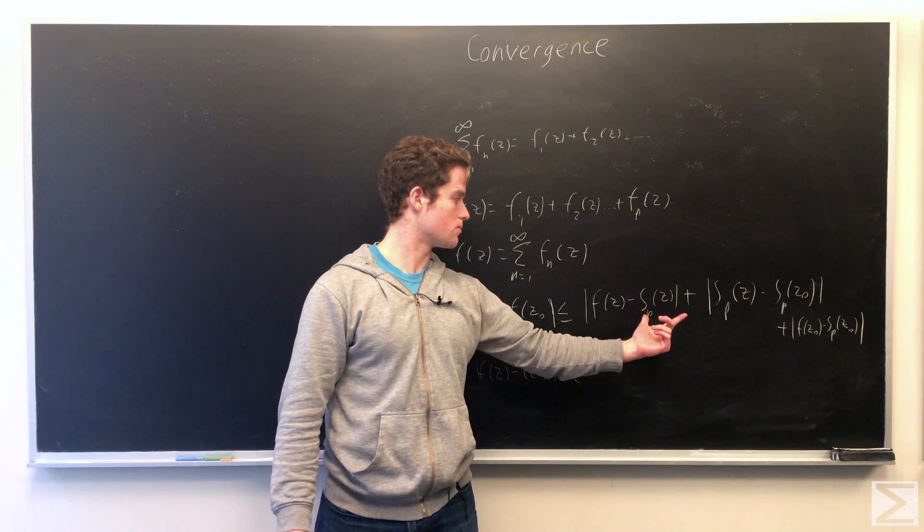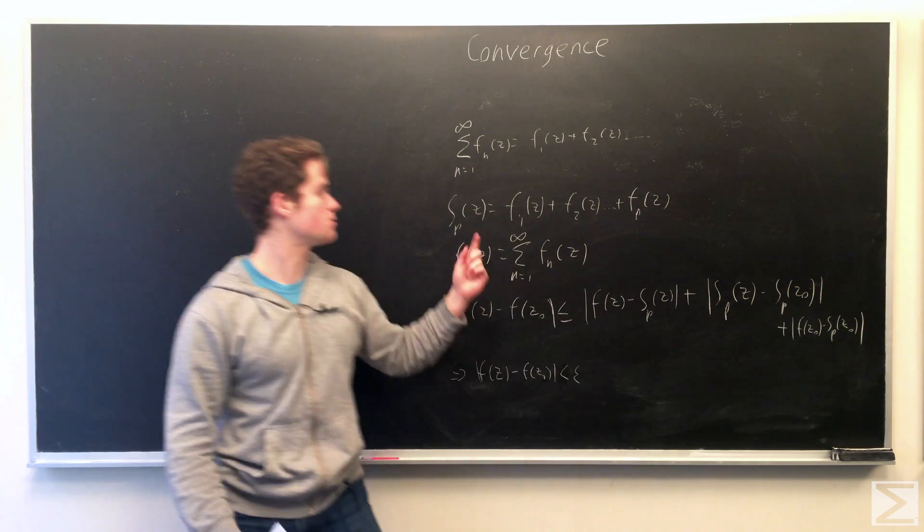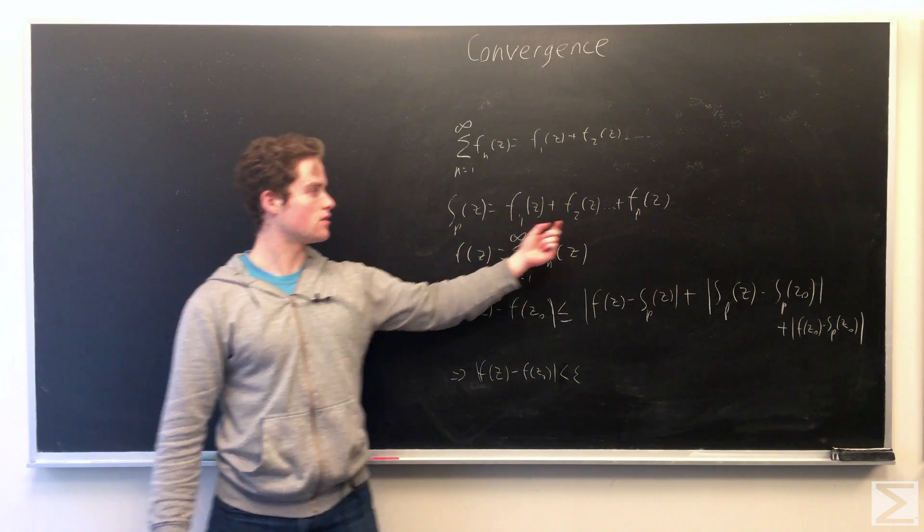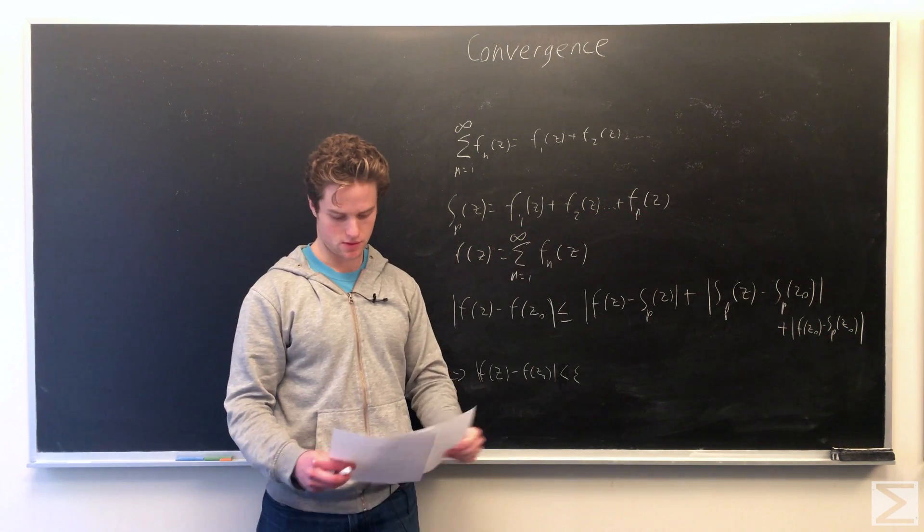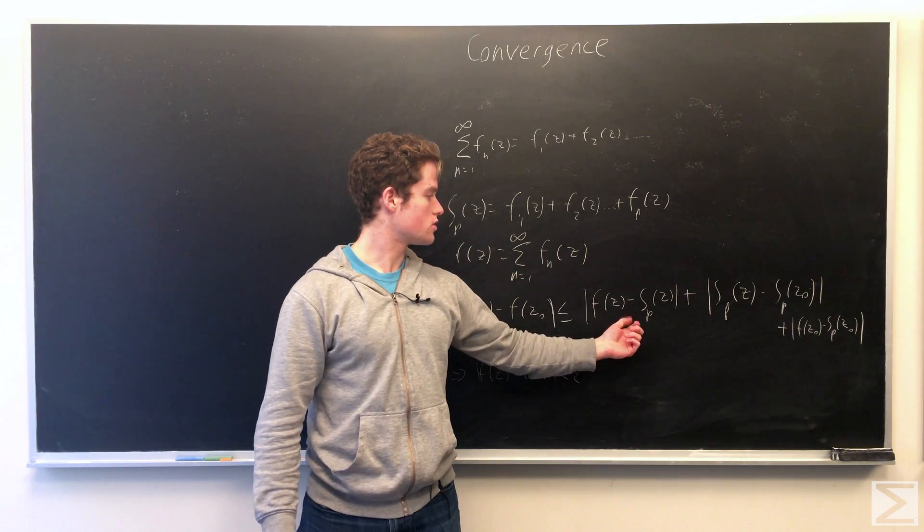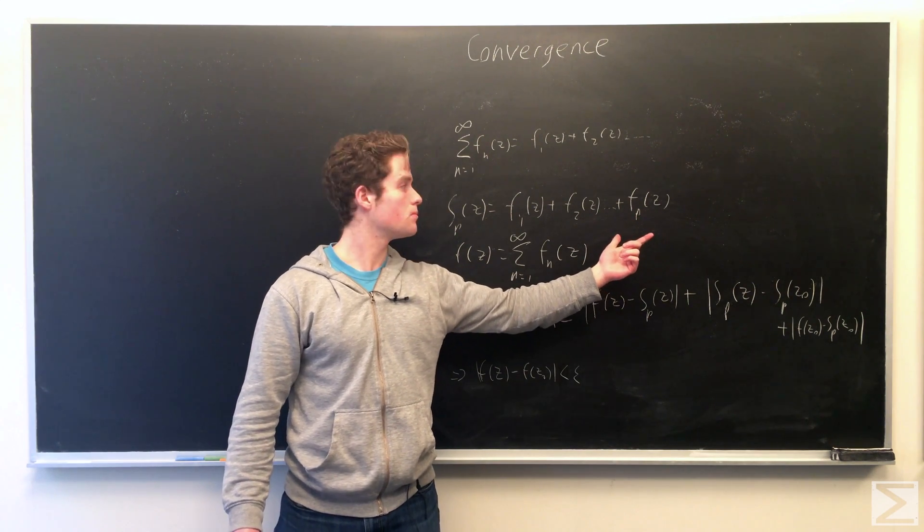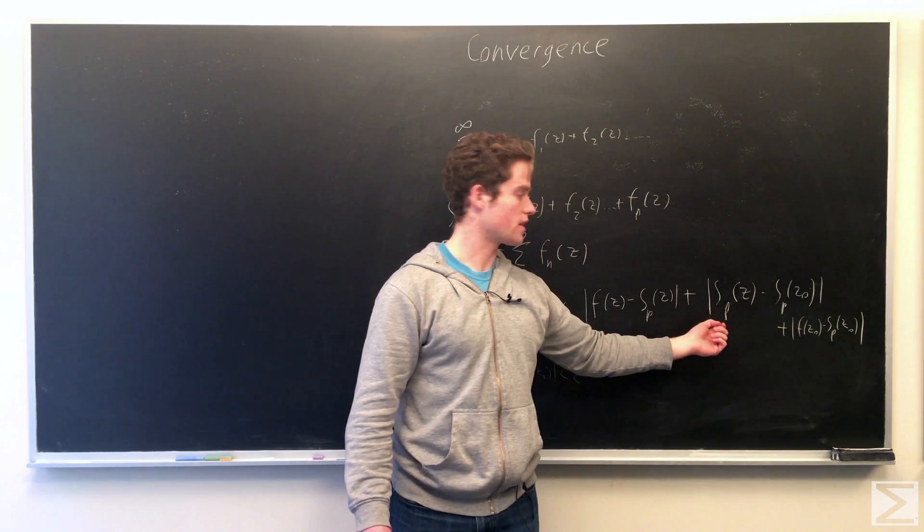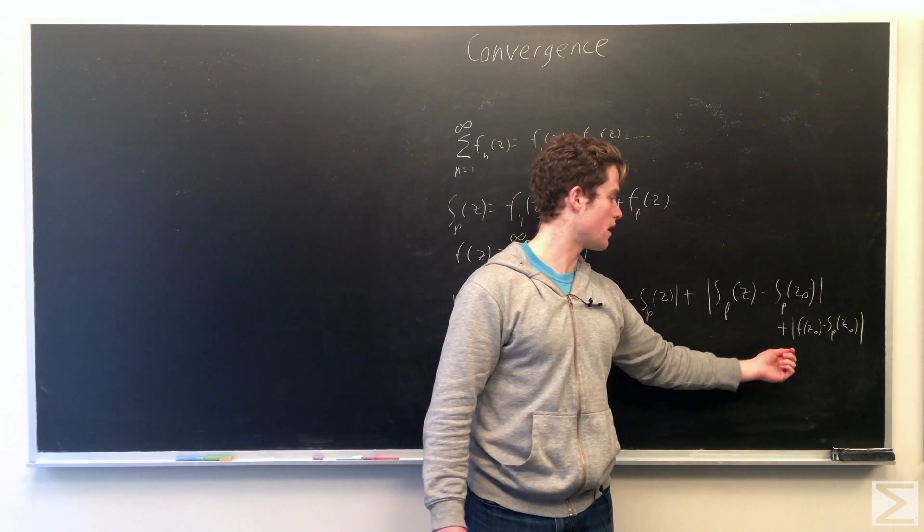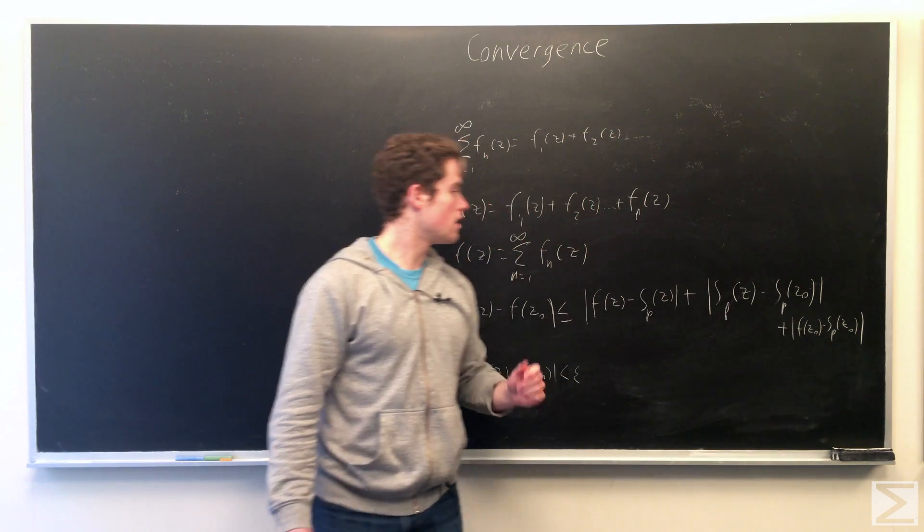So our three sums are: F of z minus Sp of z, where Sp of z is defined to be the partial sum f1 of z to fp of z. So this is just all the terms after Sp plus one of z. Second, Sp of z minus Sp at z naught. Third, F of z naught minus Sp at z naught.